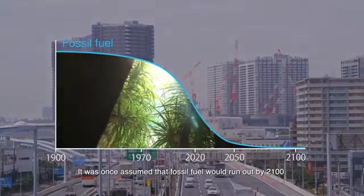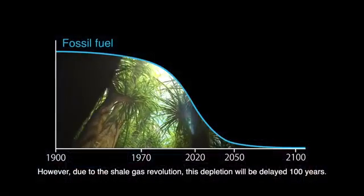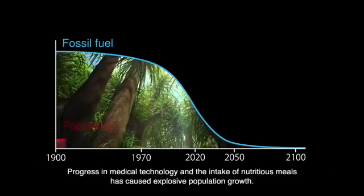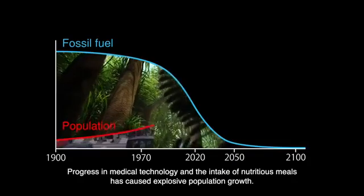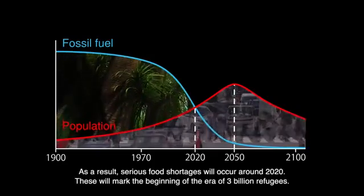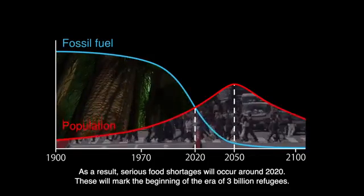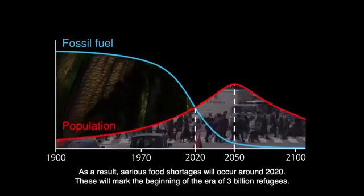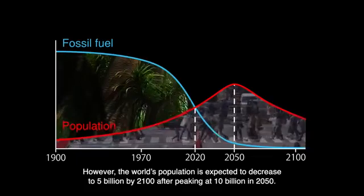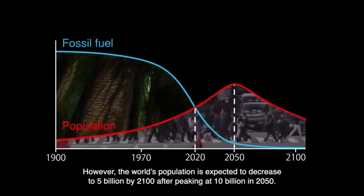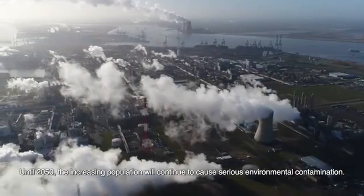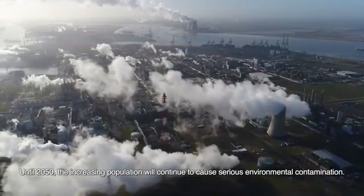It was once assumed that fossil fuel would run out by 2100. However, due to the shale gas revolution, this depletion will be delayed 100 years. Progress in medical technology and the intake of nutritious meals has caused explosive population growth. As a result, serious food shortages will occur around 2020. These will mark the beginning of the era of 3 billion refugees. However, the world's population is expected to decrease to 5 billion by 2100 after peaking at 10 billion in 2050. Until 2050, the increasing population will continue to cause serious environmental contamination.